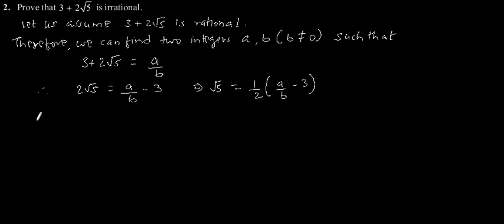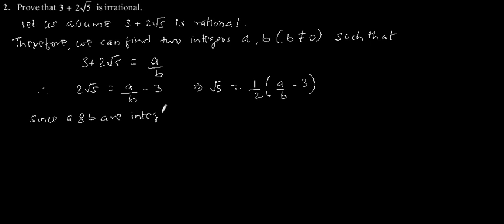And since a and b are integers, 1 by 2 into a by b minus 3 is also rational.